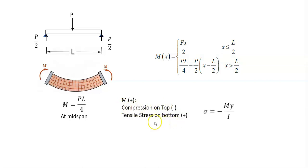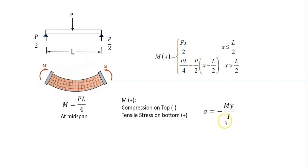You can calculate stress on top and bottom using this relation. You have moment, y is the distance from the axis of the beam, and I is the moment of inertia of the cross-sectional area of the beam.